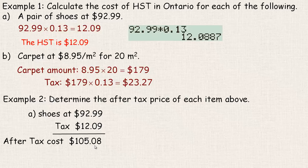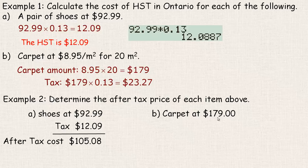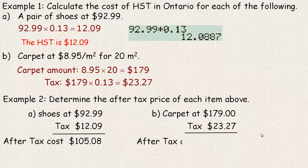If you were paying cash, you would be paying $105.10, because that's the nearest 5 cents. For the carpet, $179 plus $23.27 — the after-tax cost would be $202.27. But again, if you're paying cash, you would round that to 25 cents.